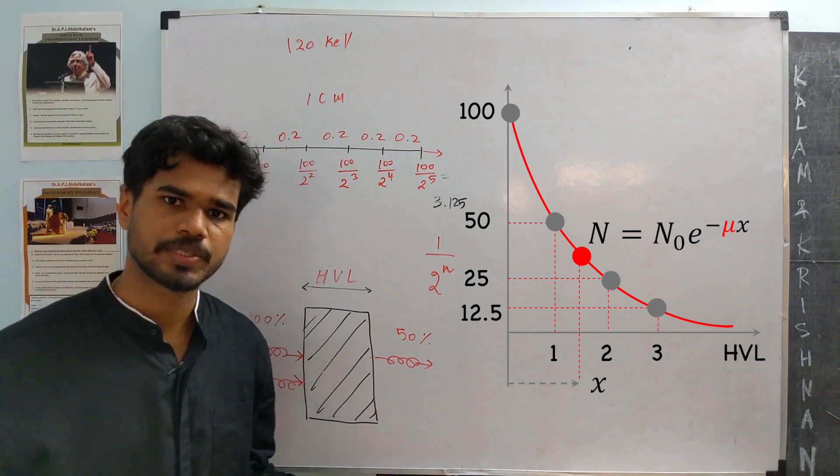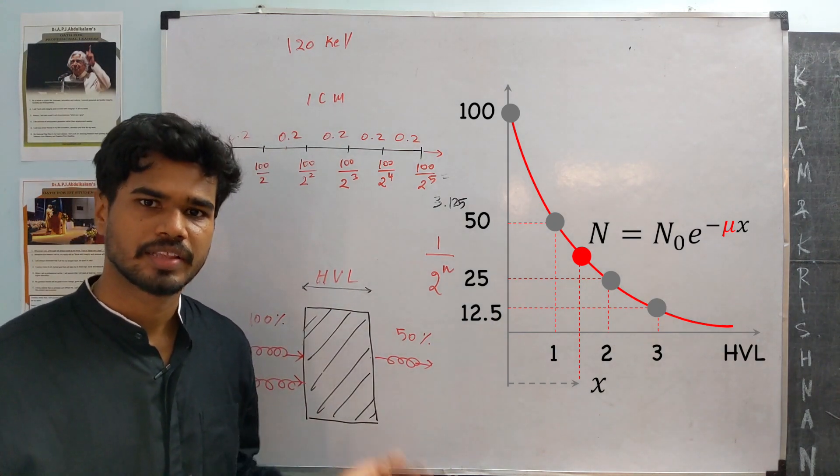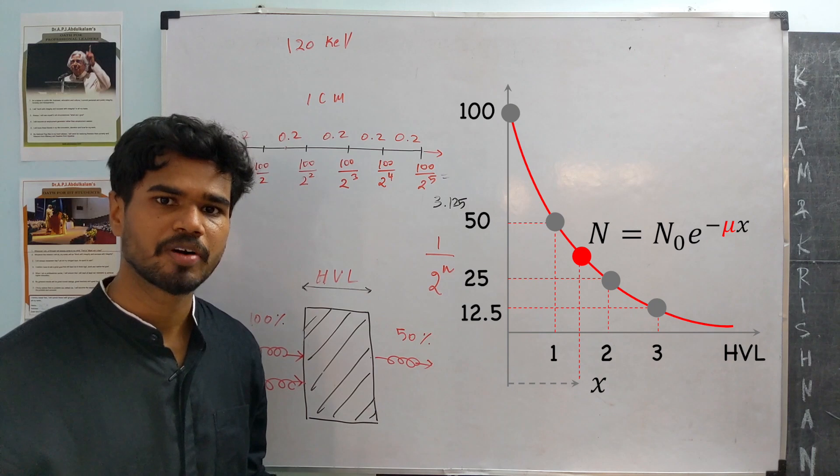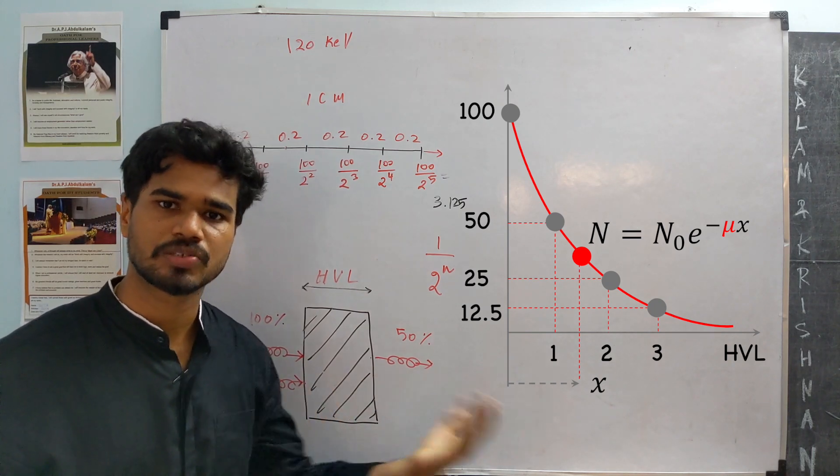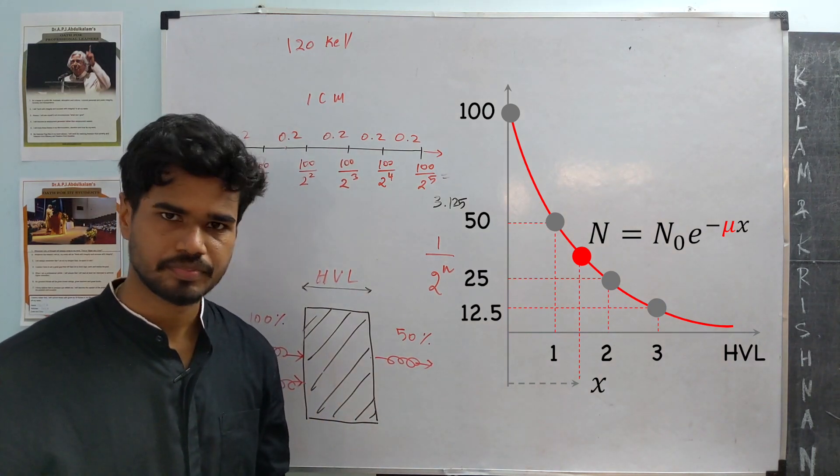The starting number of photons, which is n naught, that multiplied by e power minus mu times the distance it passes through the material x.